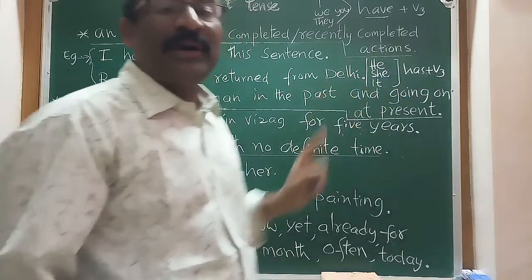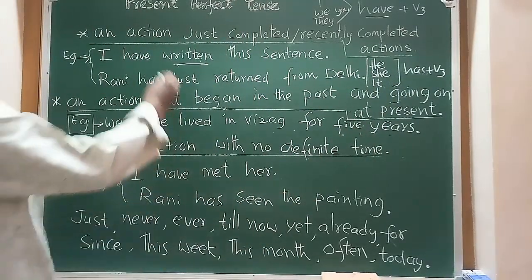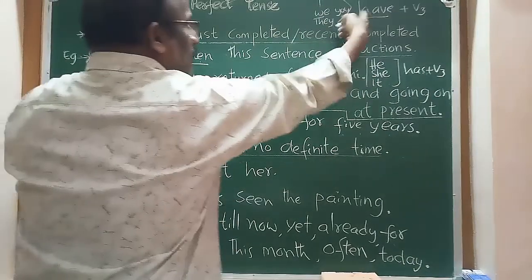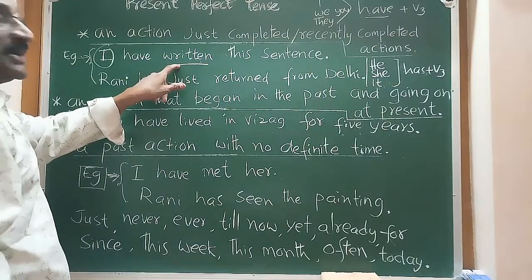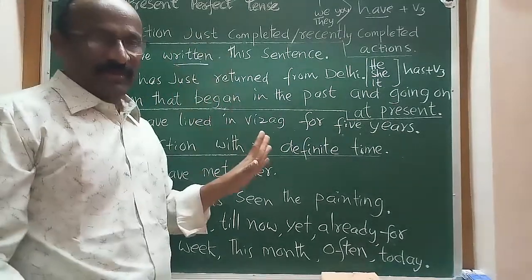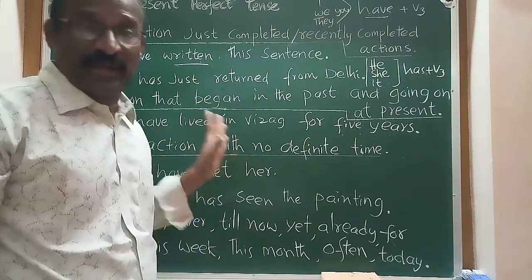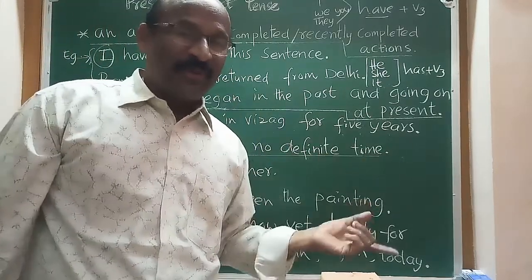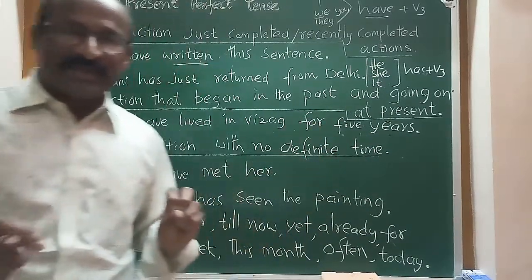So the structure is: Subject + have/has + past participle of the verb. For example: I have, we have, they have, you have — all followed by the past participle. This forms the present perfect tense. Actions that occurred just a moment ago also fall under present perfect.